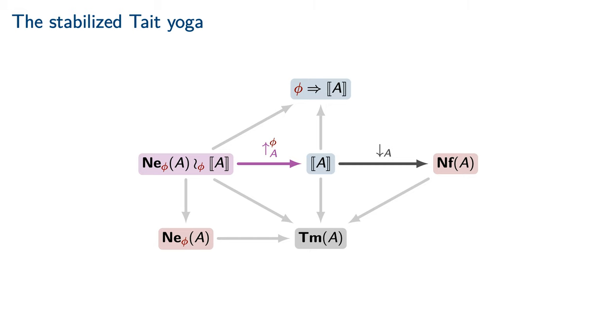With our new notion of stabilized neutral in hand, it is now possible to refine the standard Tait yoga to the cubical setting. In addition to the existing compatibility condition that the underlying equivalence class of type terms is preserved by the reflection map, we must add an additional compatibility condition. The reflection of a stabilized neutral must restrict on its frontier of instability to the partial computability data that was glued onto it. All types are indeed closed under this stabilized Tait yoga, leading immediately to the normalization result for cubical type theory.